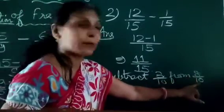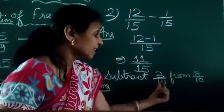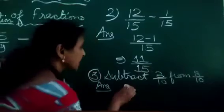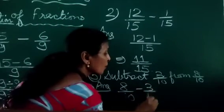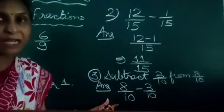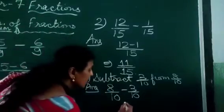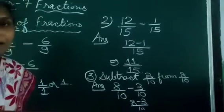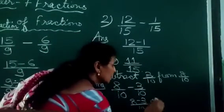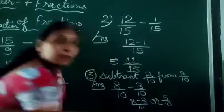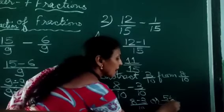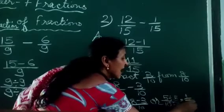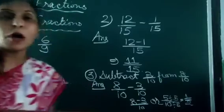Let's see another example: subtract 3 upon 10 from 8 upon 10. In this type of question we write the 'from' part first — that is 8 upon 10 minus 3 upon 10. We subtract the numerators and write the common denominator 10: 8 minus 3 is 5 upon 10. We convert to lowest form by dividing both sides by 5, giving 1 upon 2. So our answer is 1 upon 2.